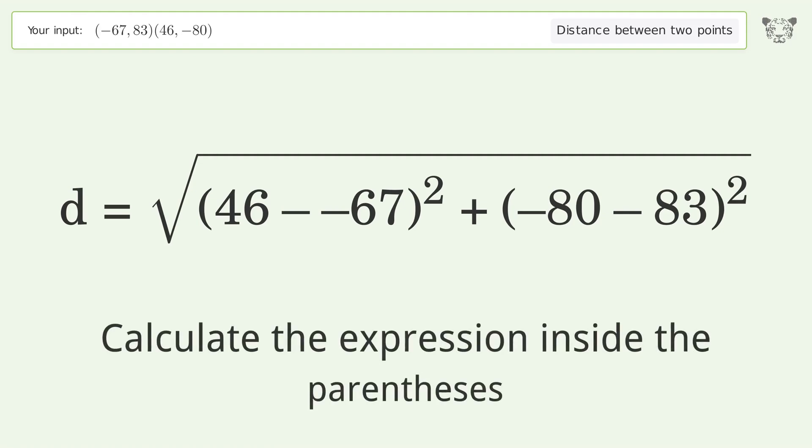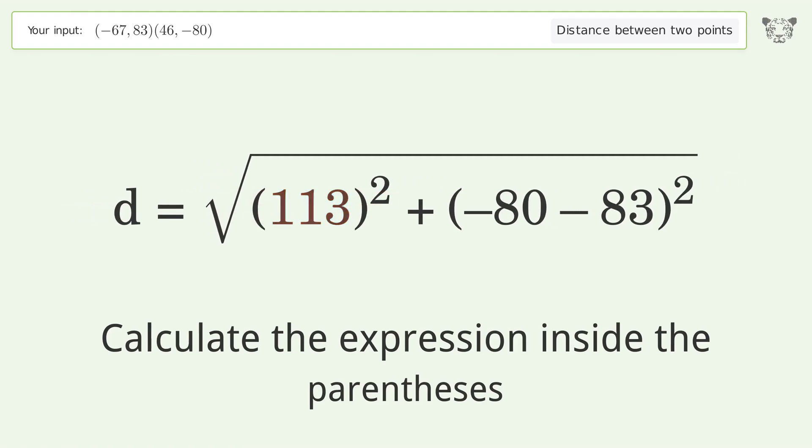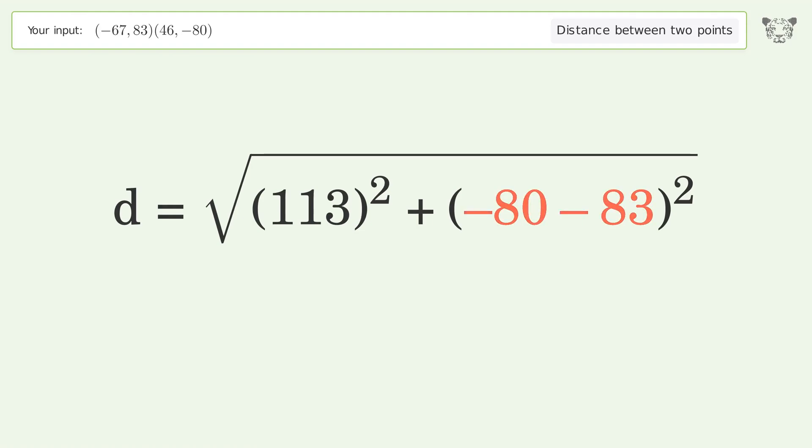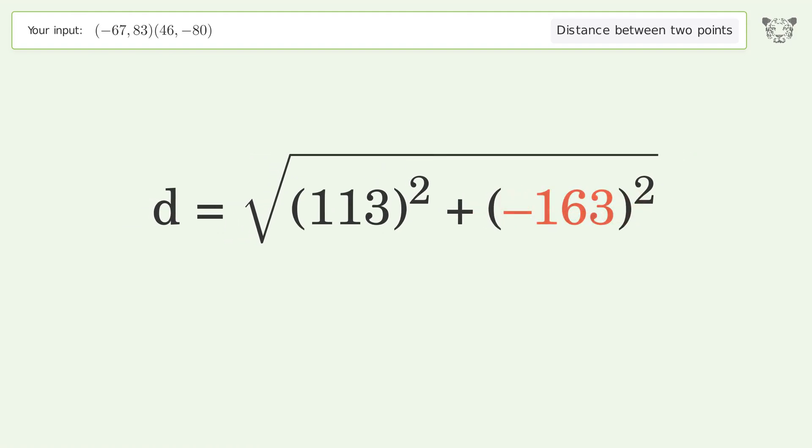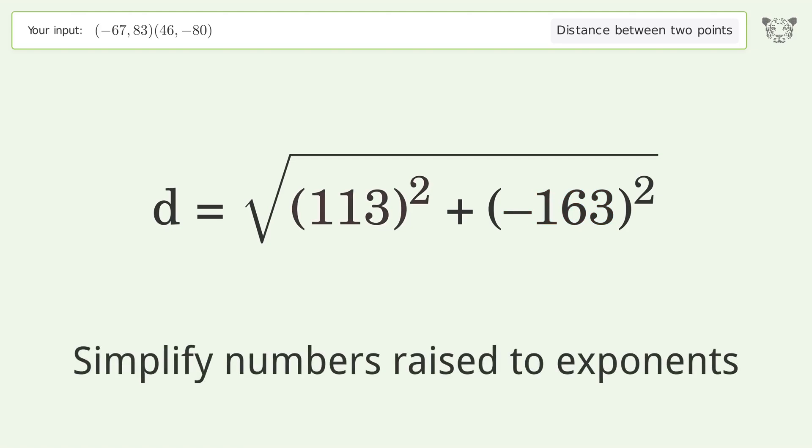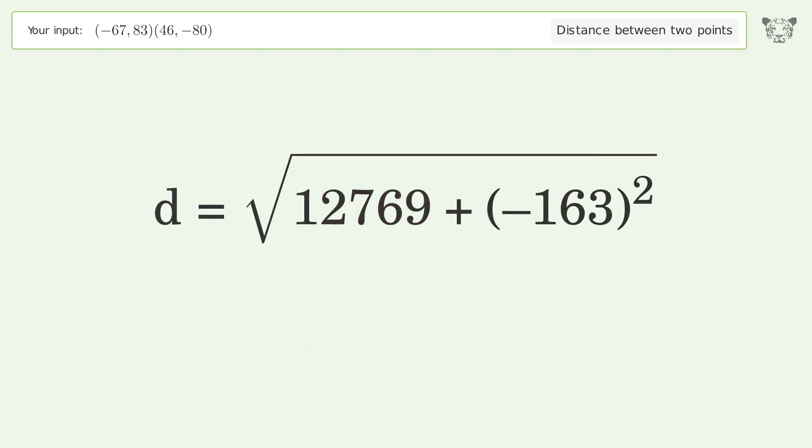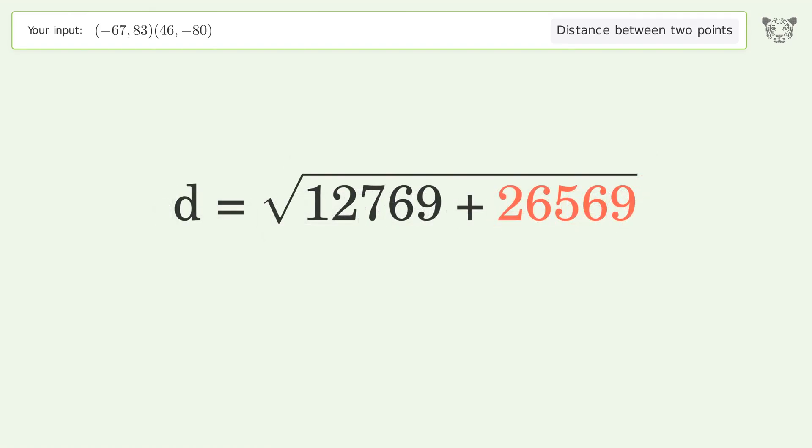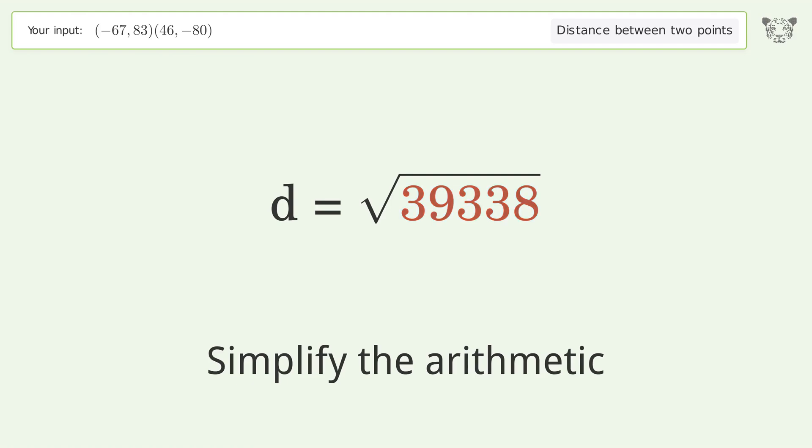Calculate the expression inside the parentheses. Simplify numbers raised to exponents. Simplify the arithmetic. And so, the distance between the two points is the square root of 39,338 or 198.338.